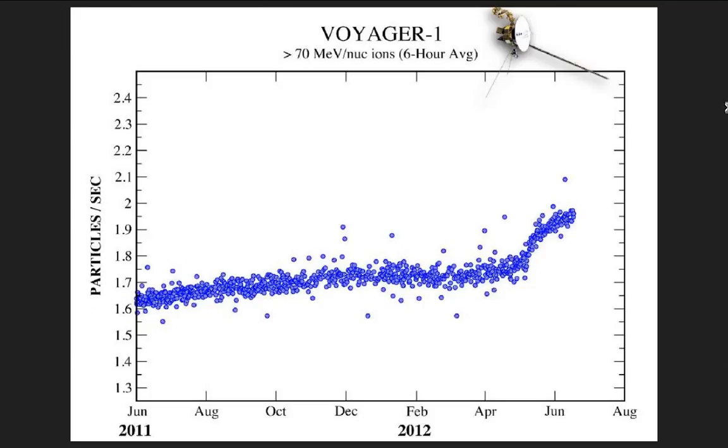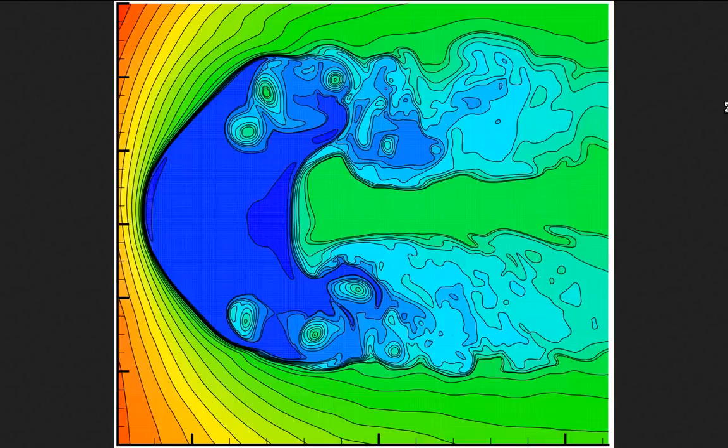There's the Voyager probe data showing a 1.6 to 1.9 change. Was that what you're referring to? Now, if warble garble, if you're watching this, pause the video because I have something to show you. That's the actual shape of the damn heliosphere.